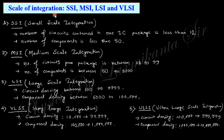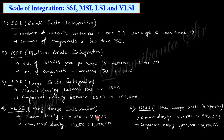Next is the scale of integration — how many components are arranged within an IC. Within one square centimeter: fewer than 12 components is Small Scale Integration (SSI); 13 to 99 is Medium Scale Integration (MSI); 100 to 999 is Large Scale Integration (LSI); 10,000 to 99,000 is Very Large Scale Integration (VLSI); and 100,000 to 999,000 is Ultra High Scale Integration (ULSI).